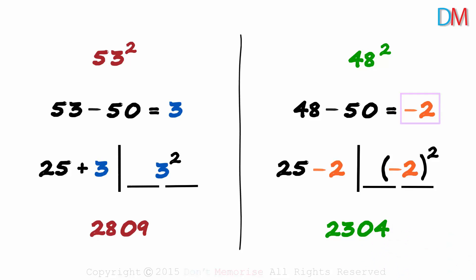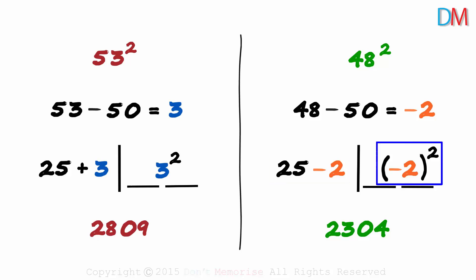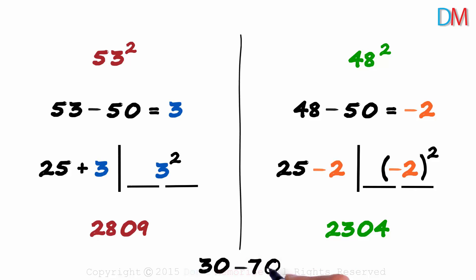To summarize: find the difference, add that difference with 25, and square that difference. This method works with numbers that lie between 30 and 70, but works best when the numbers are very close to 50.